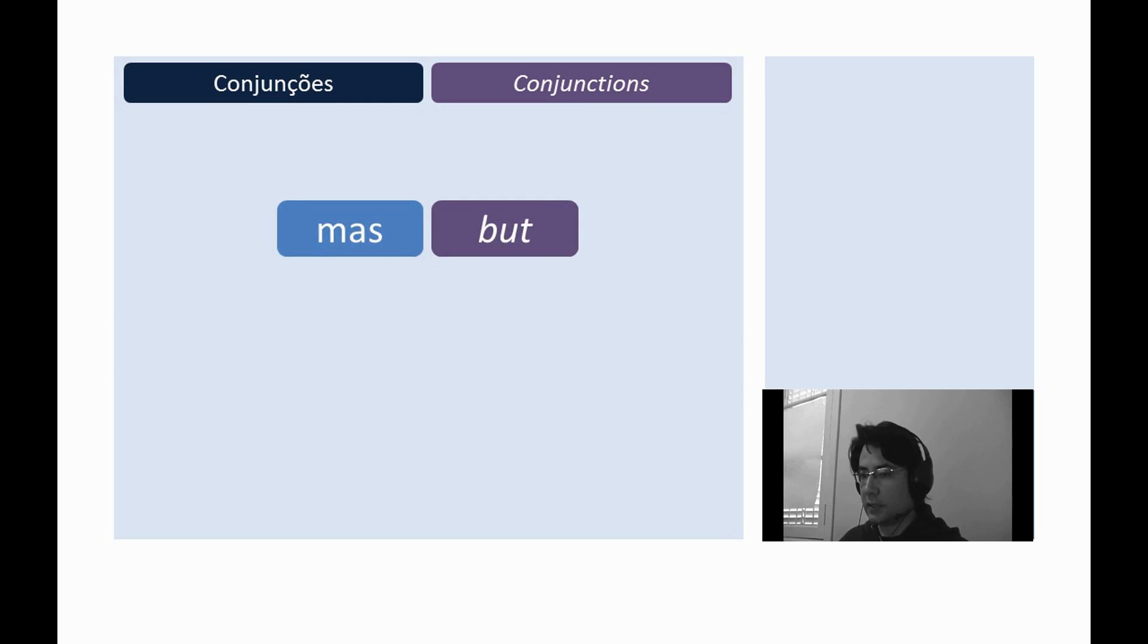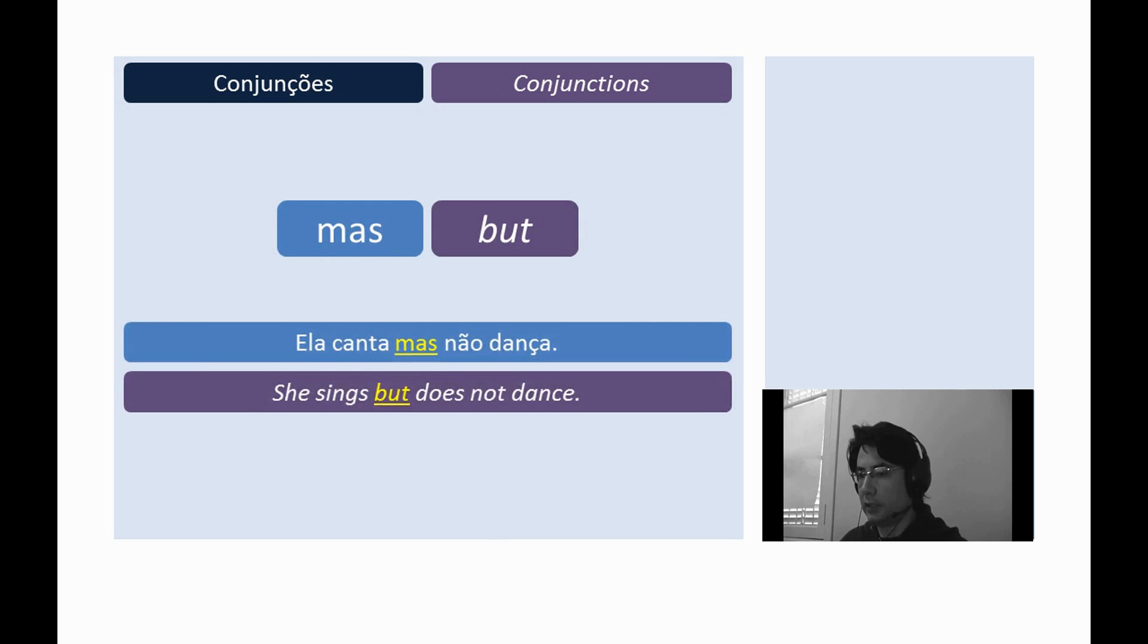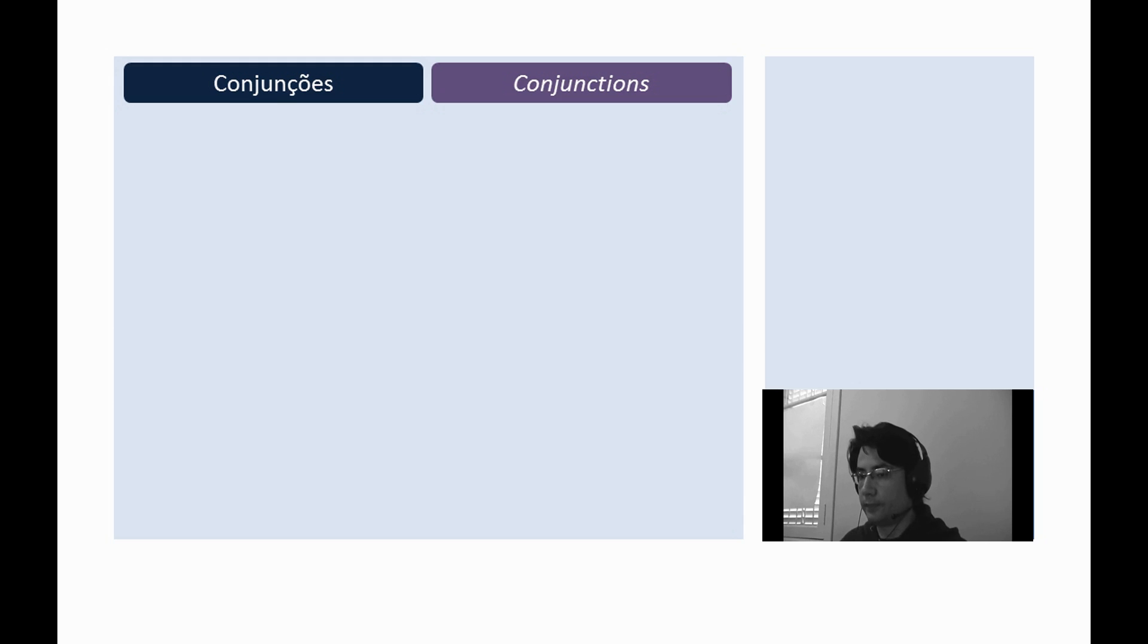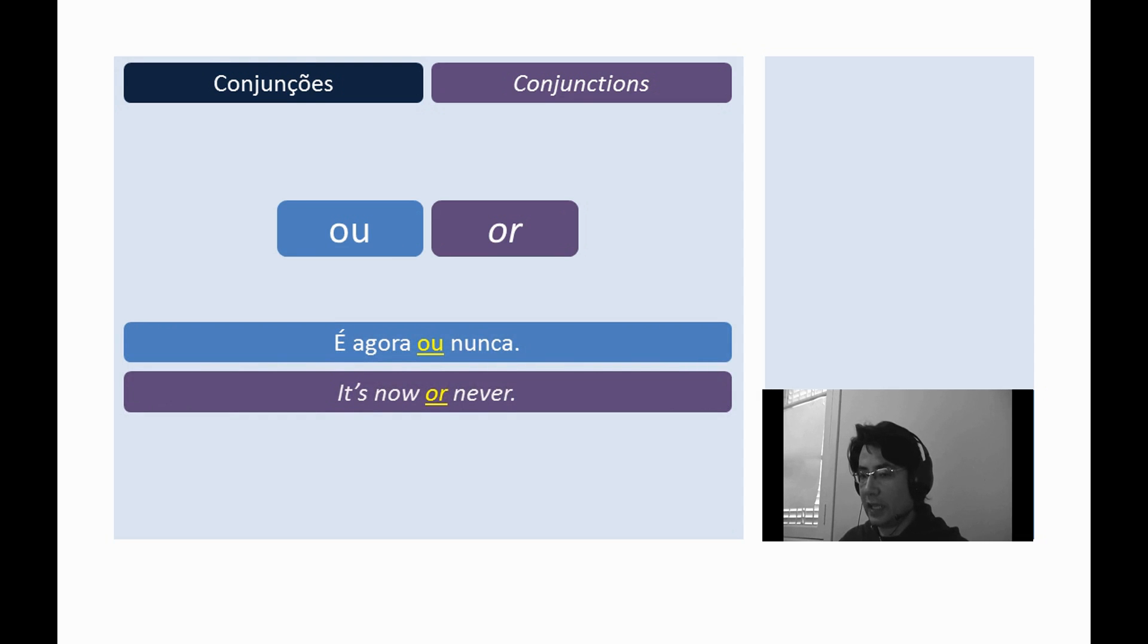Mas means 'but'. Ela canta mas não dança. She sings but does not dance. Ou means 'or'.